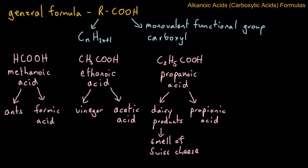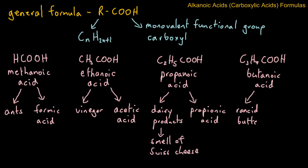Finally, we have the fourth acid in this homologous group — an acid with four carbon atoms: C3H7COOH. This is butanoic acid, and you find it, for example, in rancid butter or, even more noteworthy, in sweaty socks. So you can always blame butanoic acid for your sweaty socks. The old name came from the Greek word for butter, which was butyric acid.